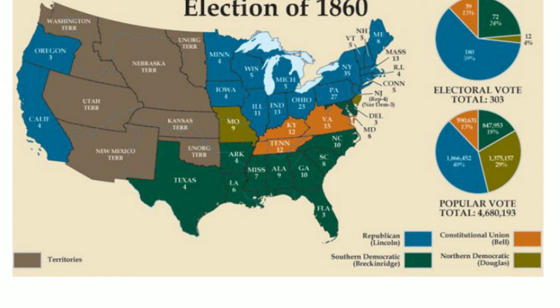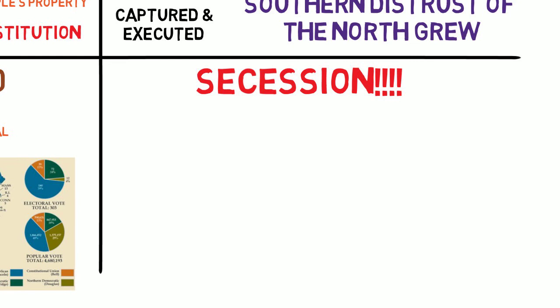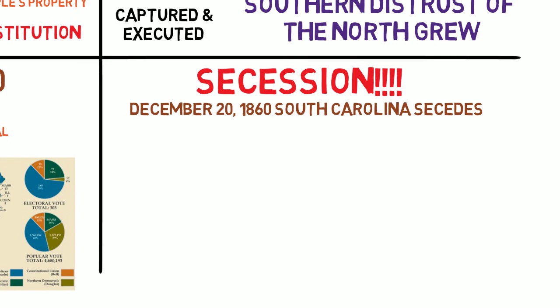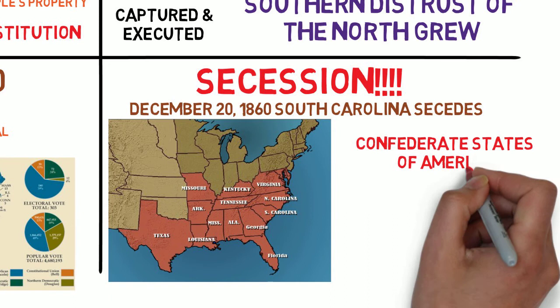After the election, Southerners saw the writing on the wall regarding the future of slavery. State governments throughout the South began holding secession conventions, and South Carolina was the first to secede, followed by ten other Southern states. They declared themselves a new country, the Confederate States of America, and chose Jefferson Davis as their president.